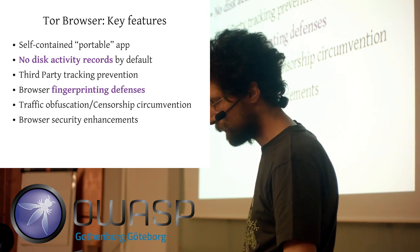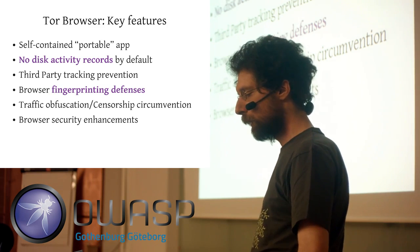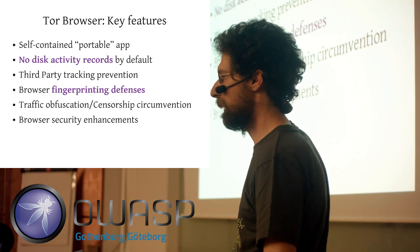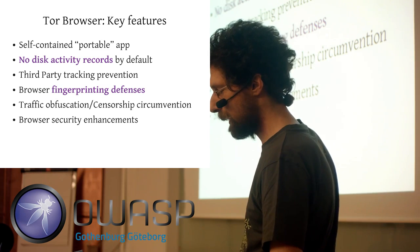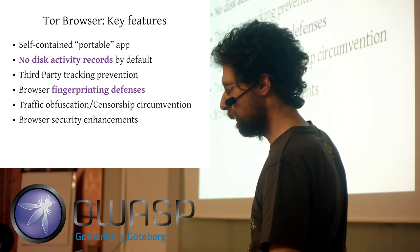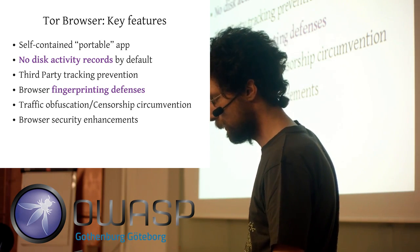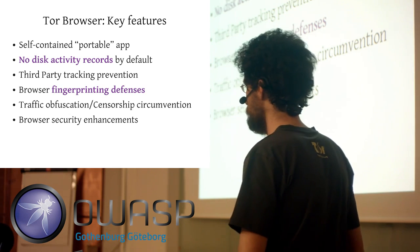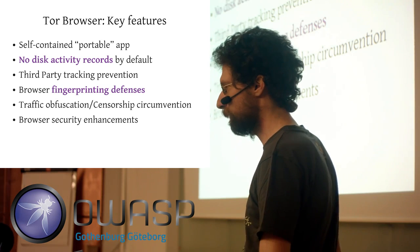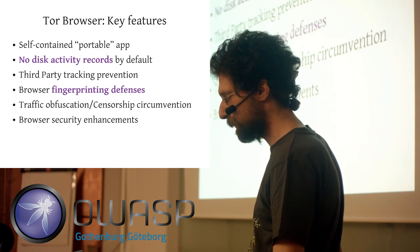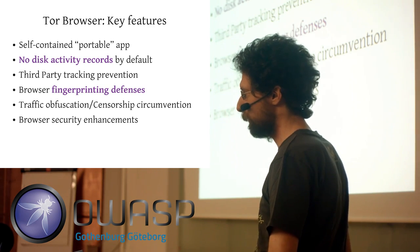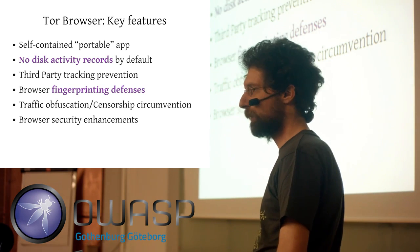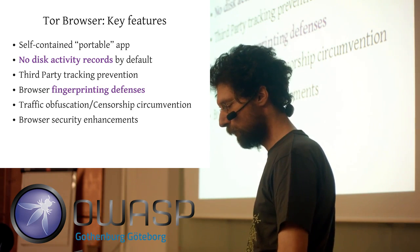We also have third-party tracking prevention and browser fingerprinting defenses. And we have censorship circumvention. There are people in countries like Iran or China who cannot reach the Tor Network because governments have firewalls and censorship equipment. So we developed so-called pluggable transports, which obfuscate traffic to make it much harder for those governments to detect and block Tor traffic. These are part of Tor Browser.